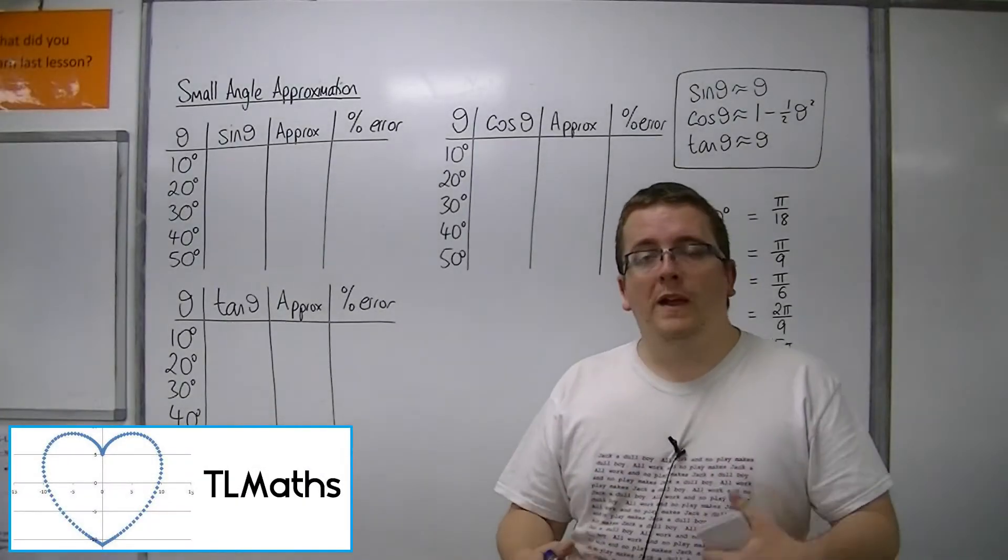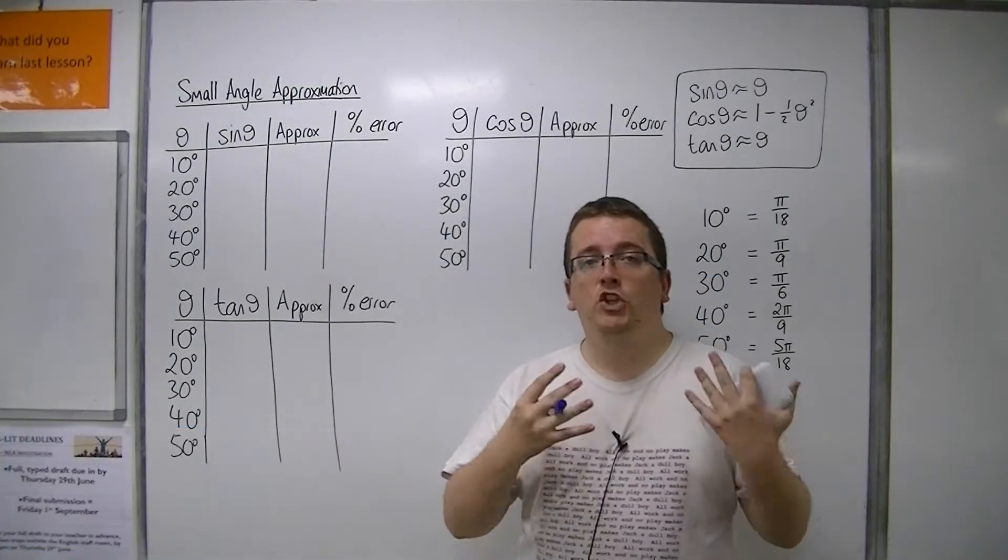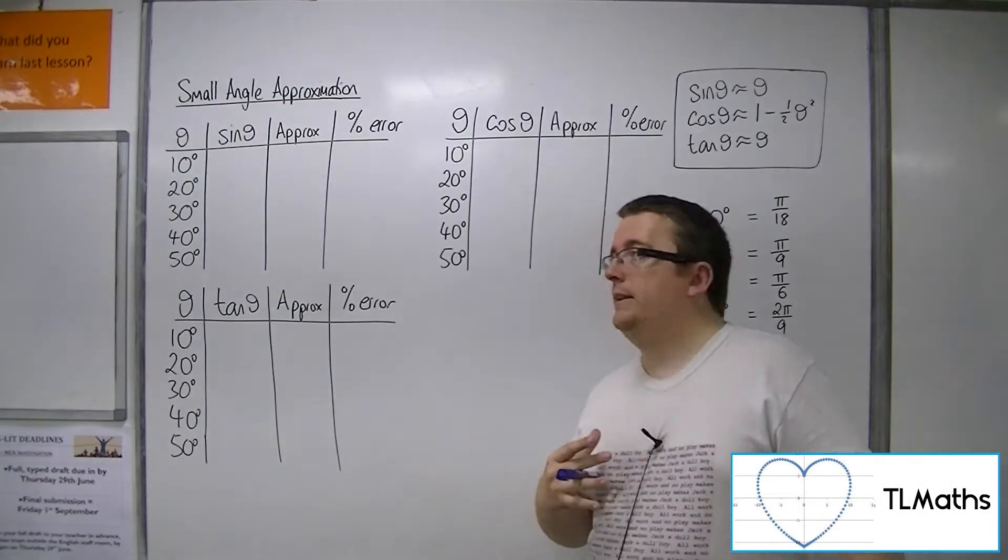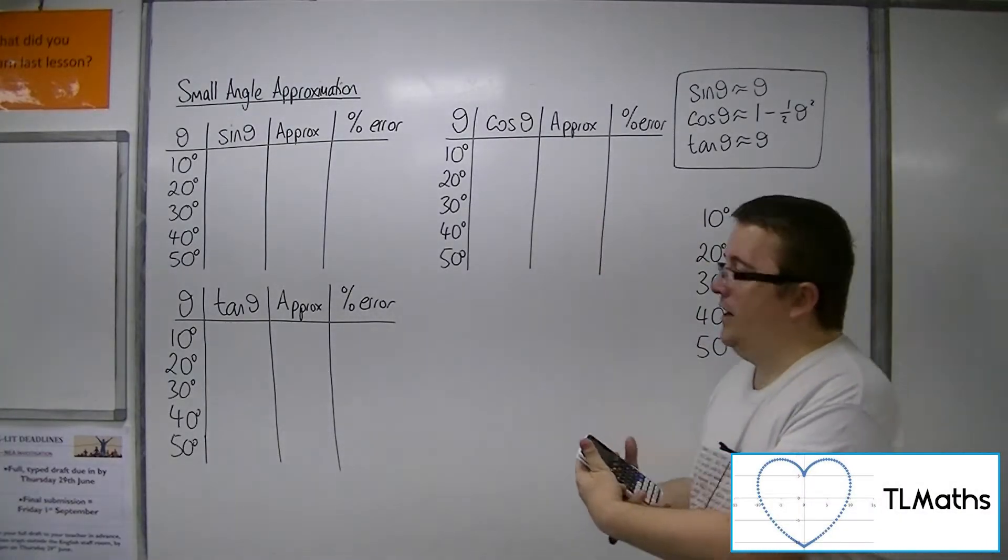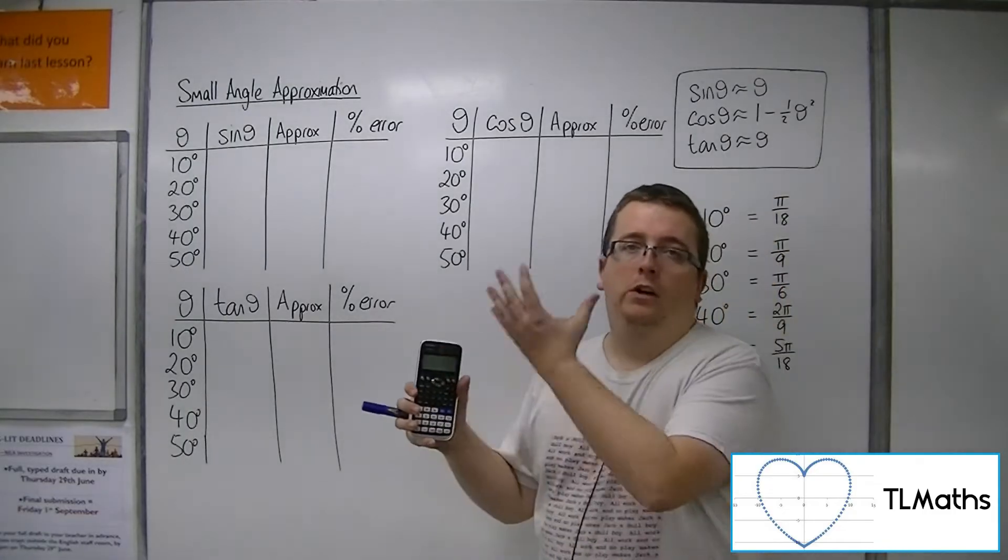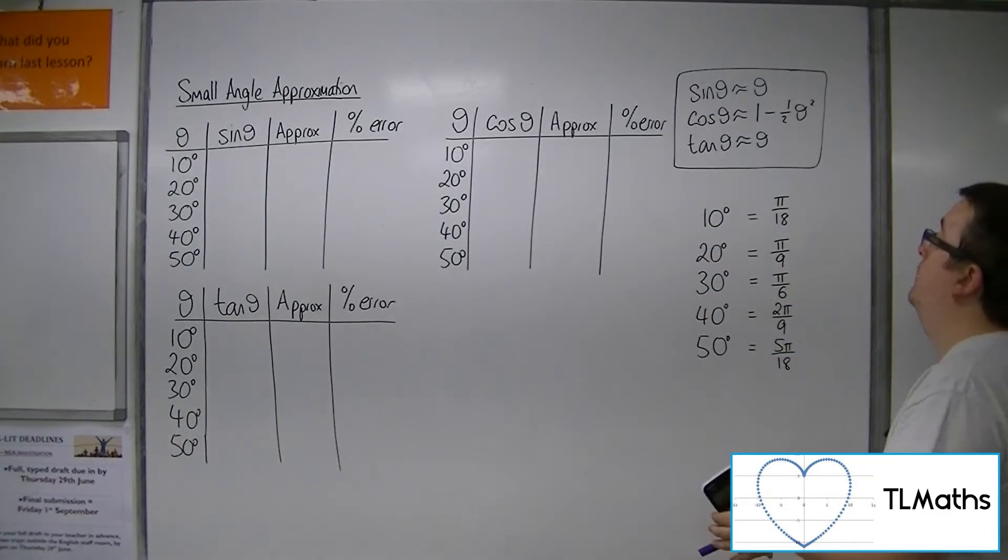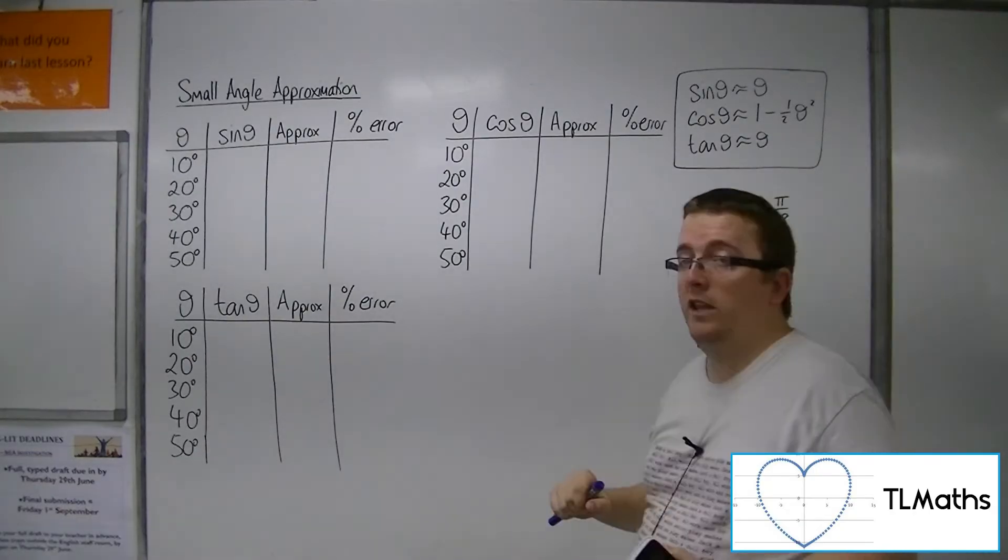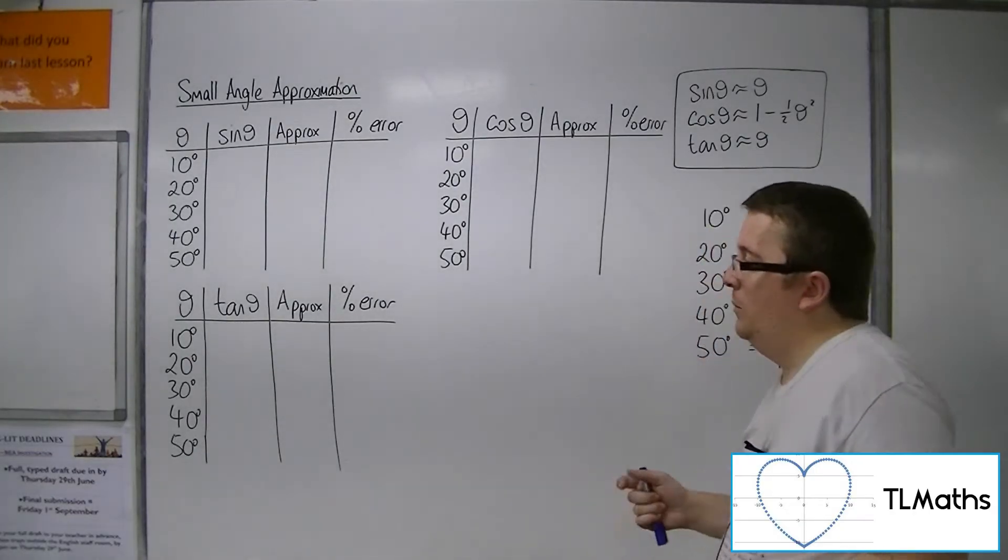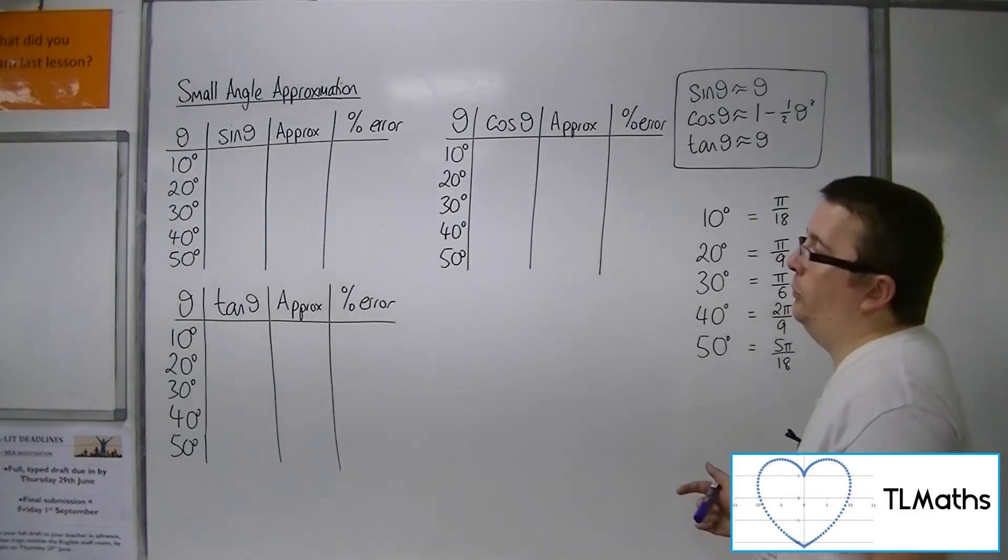In this video, what we want to do is investigate the percentage error between the actual calculator giving me the result of sine of an angle, or cos of an angle, or tan of an angle, and the approximation that we're using. We're going to see what results we get.